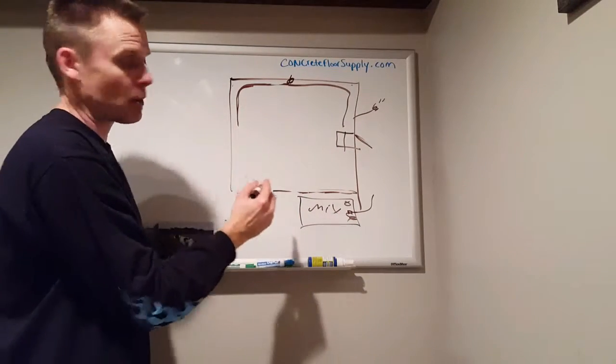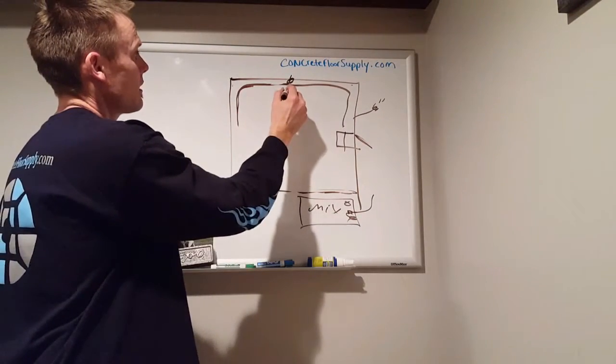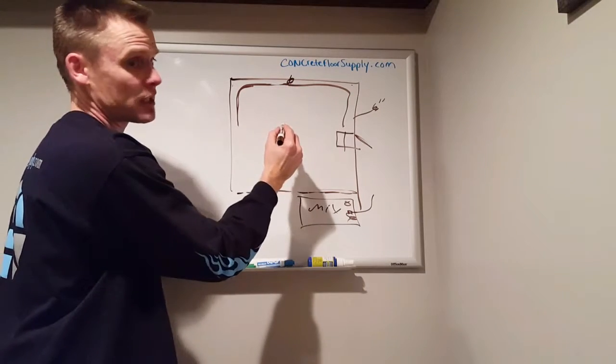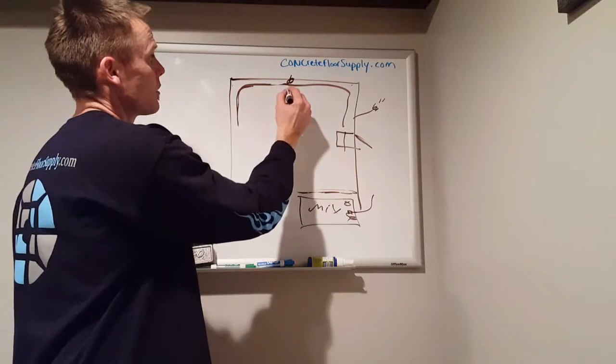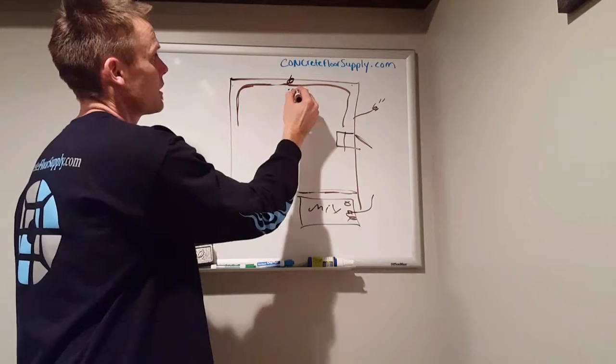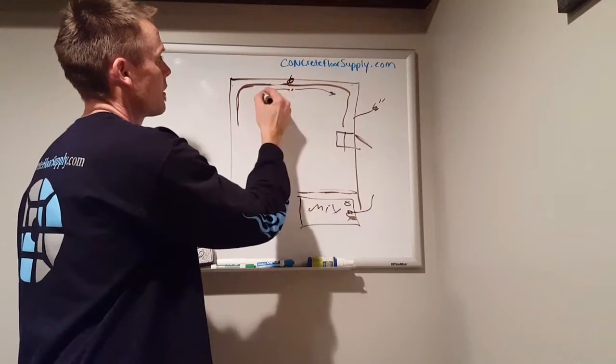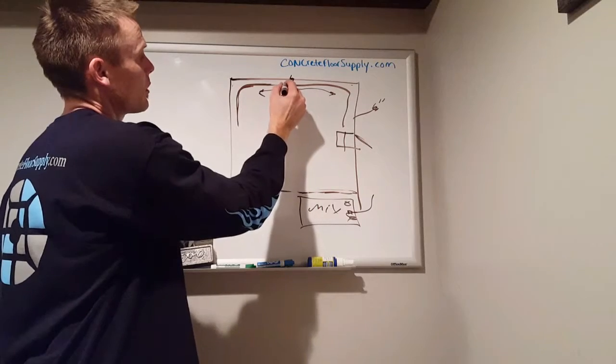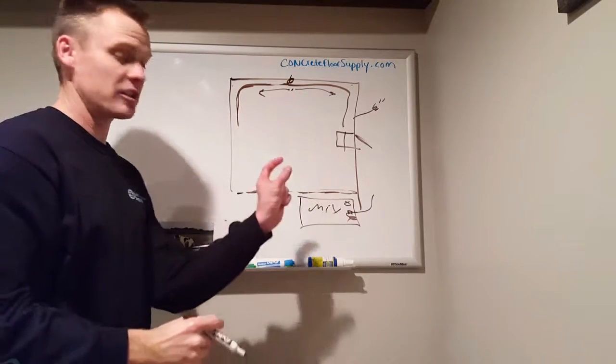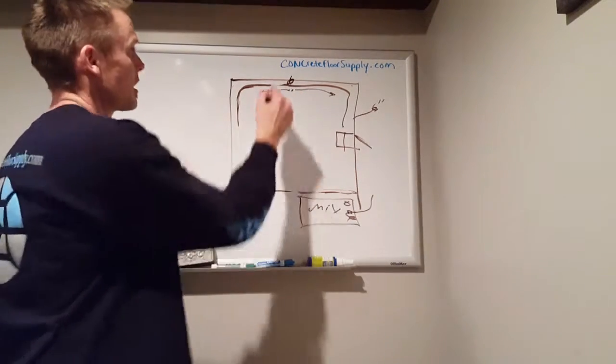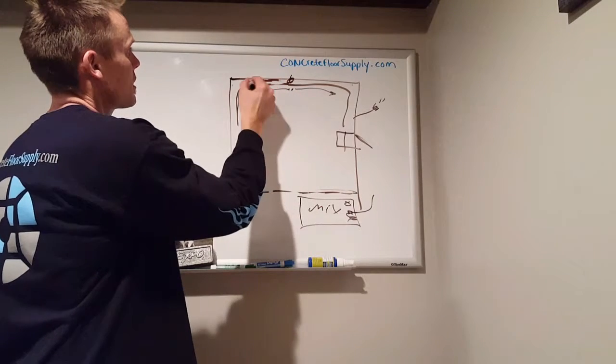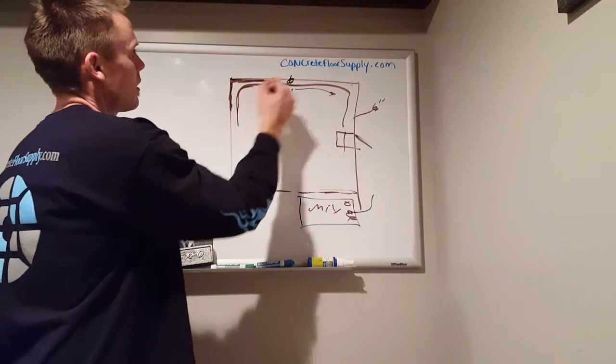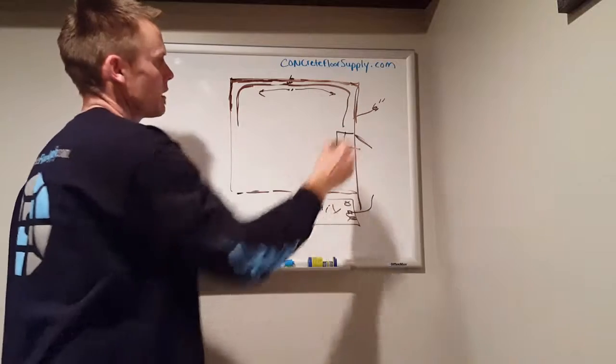Your next step, and you're in your spike shoes at this point, is to, and if you have two people this actually works best, so you have a person here and a person here and you start in the middle and you work out. And what these folks are doing initially is taking a chip brush or just a cheap little paint brush and going along the edge and cutting it in real quick, going along cutting it in.